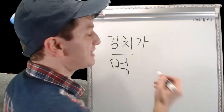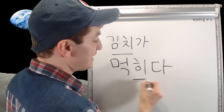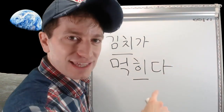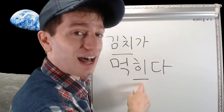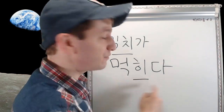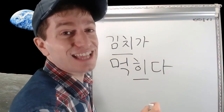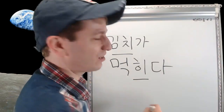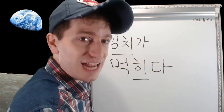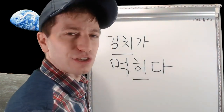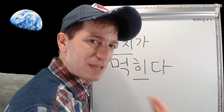The verb for 'to be eaten' is 먹히다. You might think you just add -히 before the 다 and now you have a passive version — no. Unfortunately, it's not that easy. Sometimes the word completely changes to become passive, so you have to learn it on a word-by-word basis.